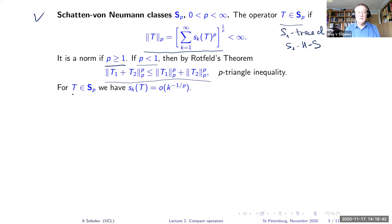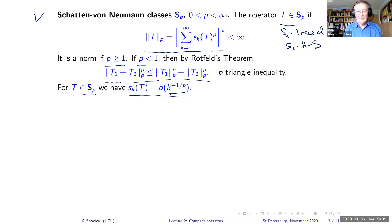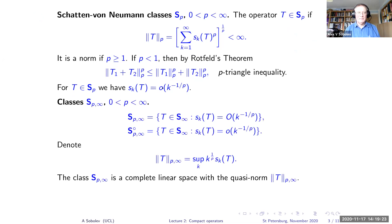If a compact operator is in Schatten–von Neumann class S_p, then because the sum is finite, we can immediately say the singular values s_k are little-o of k^(−1/p) — they decay faster than this power of k. I promised to classify operators depending on the rate of decay, and this fulfills that promise.